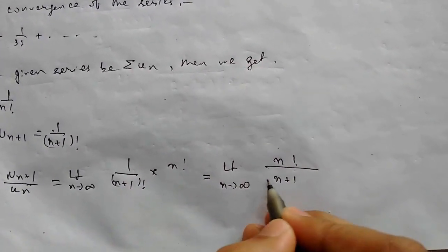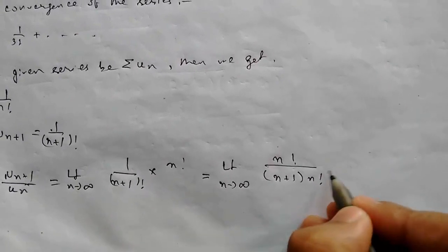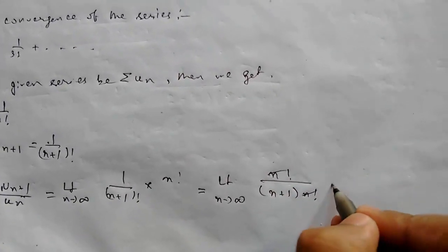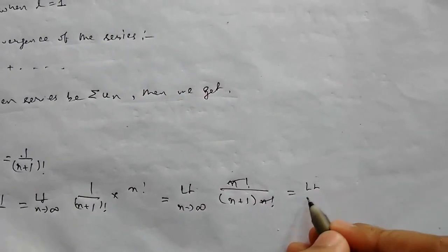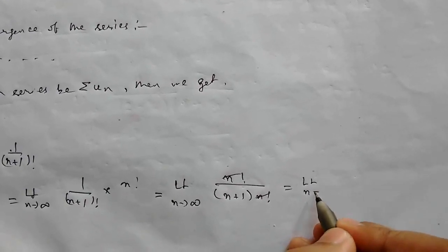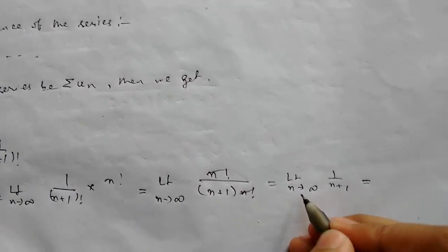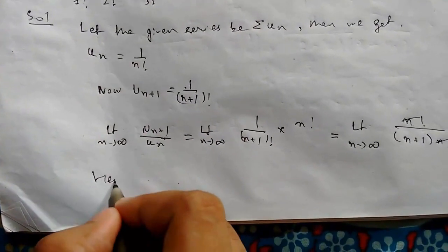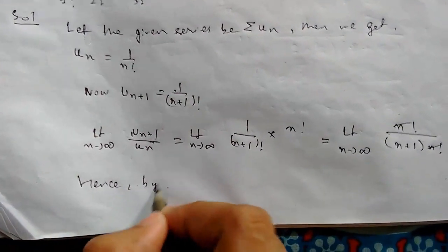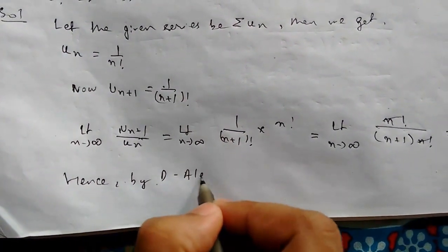this will be (n+1) times n factorial. So this gets cancelled out: limit n tending to infinity 1 upon (n+1). Substituting infinity, this will be 0, which is less than 1. So hence by D'Alembert's